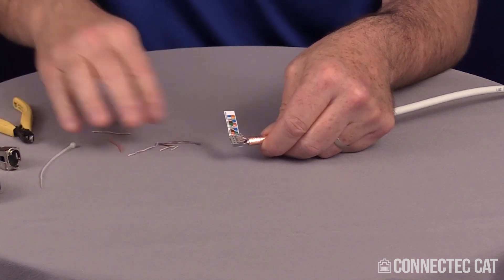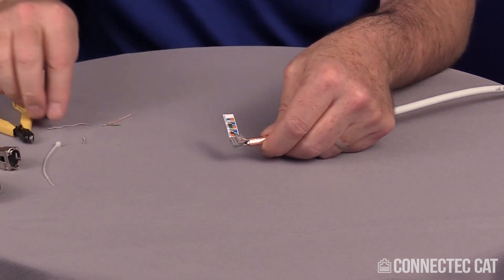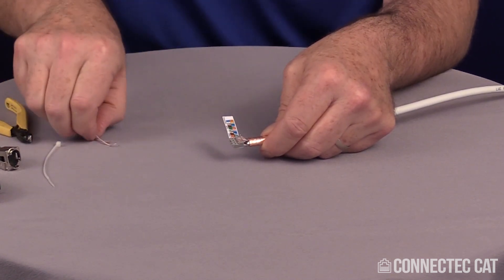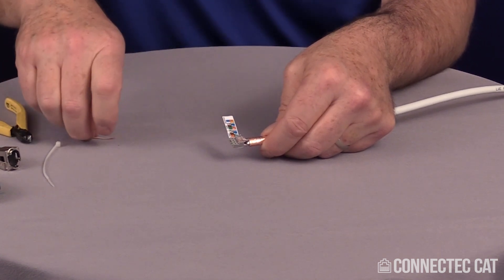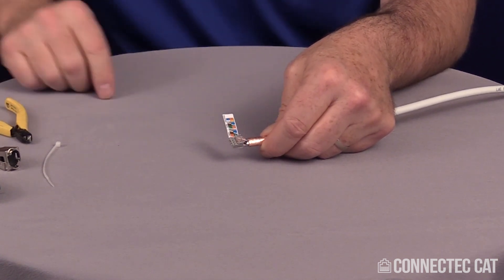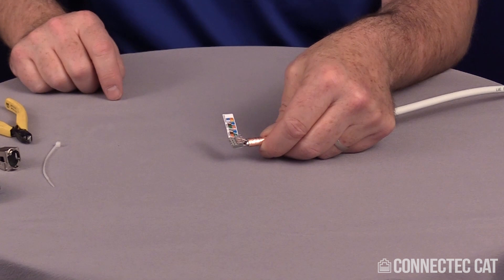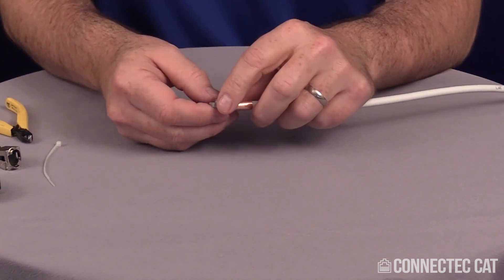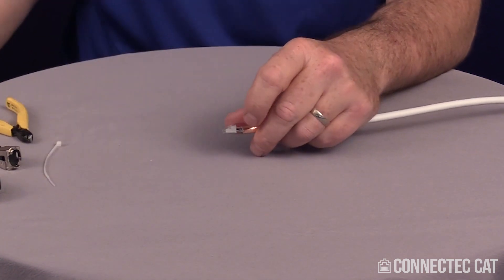Now at this point, I can leave the label on. If you're going to re-terminate this connector, it's a good idea to keep the label on. If you're not going to re-terminate it, you can pull the label off. It works with the label or without the label, either way. I'm going to peel the label off on this demonstration and throw that away.